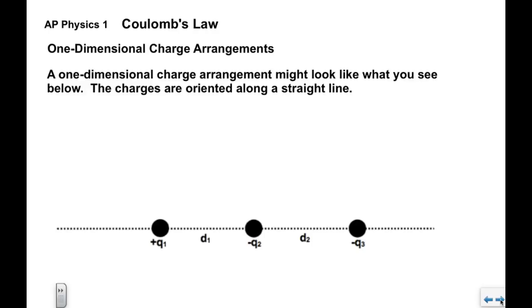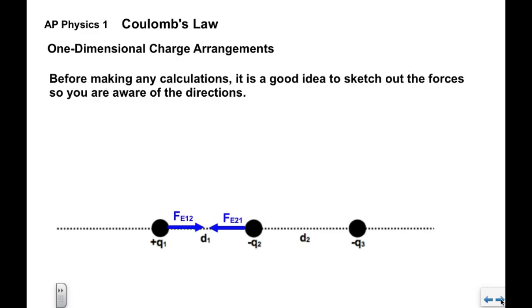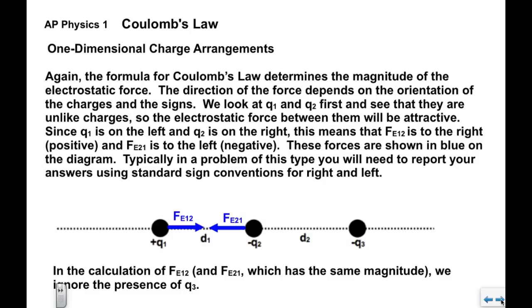We can see arrangements in one dimension or two dimensions. A one-dimensional charge arrangement might look like three charged objects oriented along a straight line. Q1 and Q2 are separated by distance d1; Q2 and Q3 are separated by distance d2. Q1 is positive, Q2 is negative, and Q3 is negative. It's a good idea to sketch out the forces before making any calculations, so you're aware of the directions — you don't even need the numbers. The formula for Coulomb's Law determines the magnitude; the direction depends on orientation and signs.